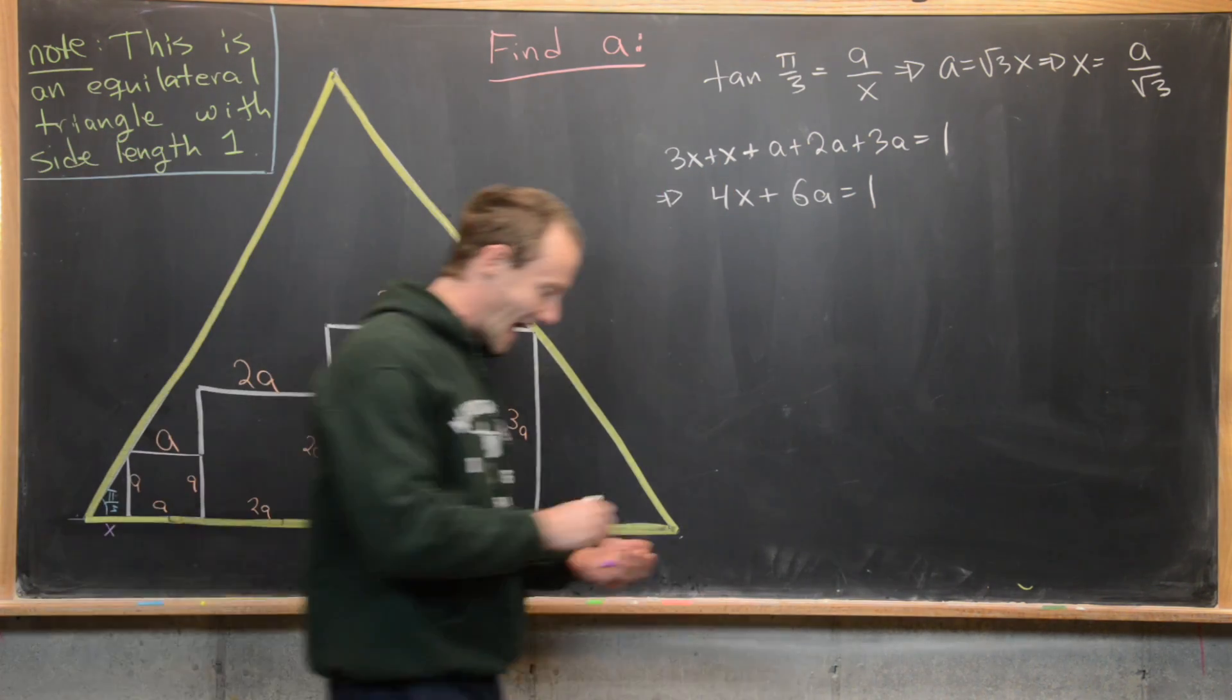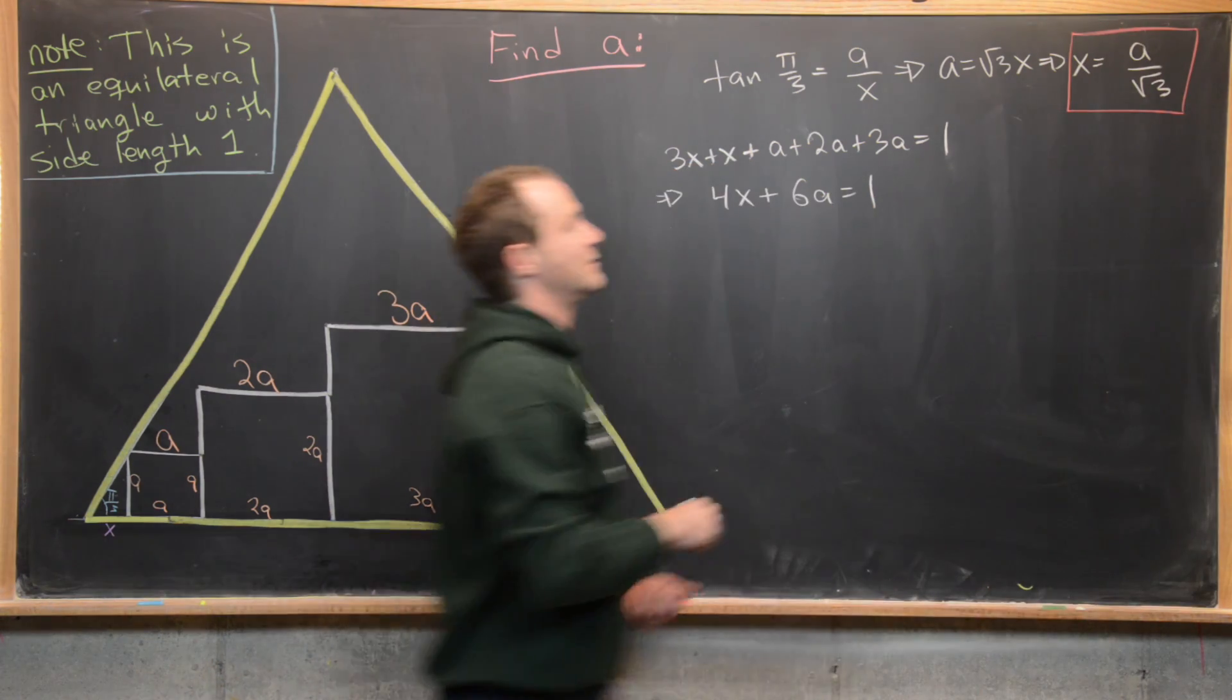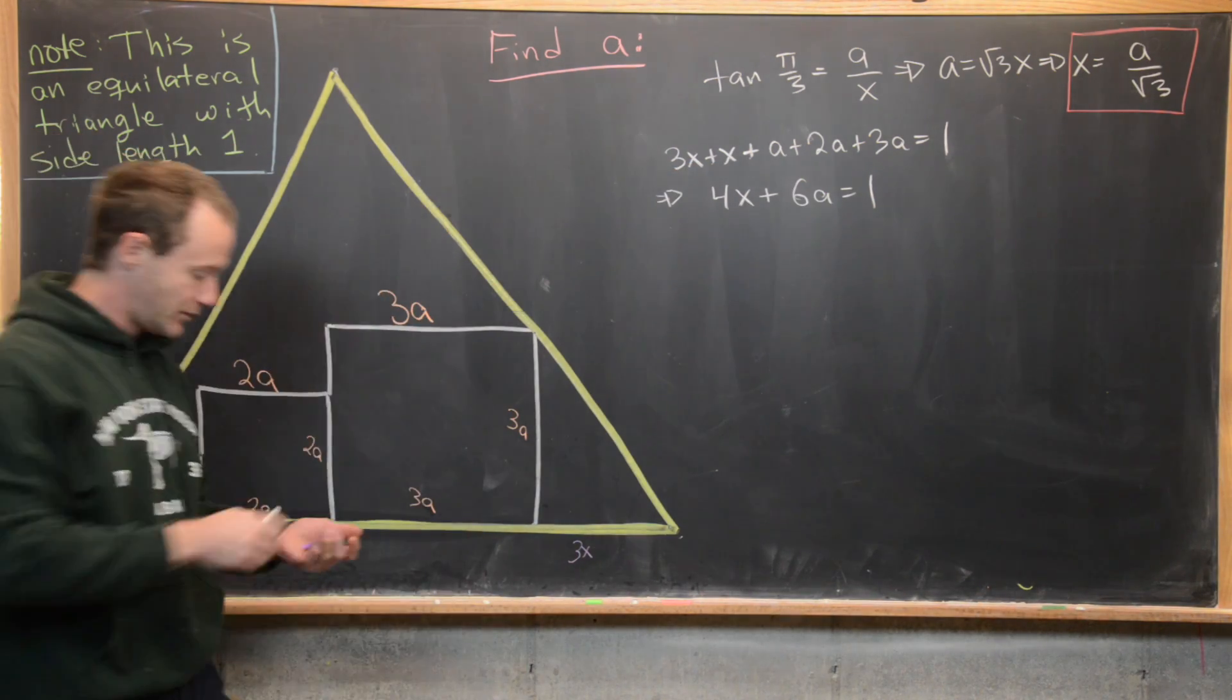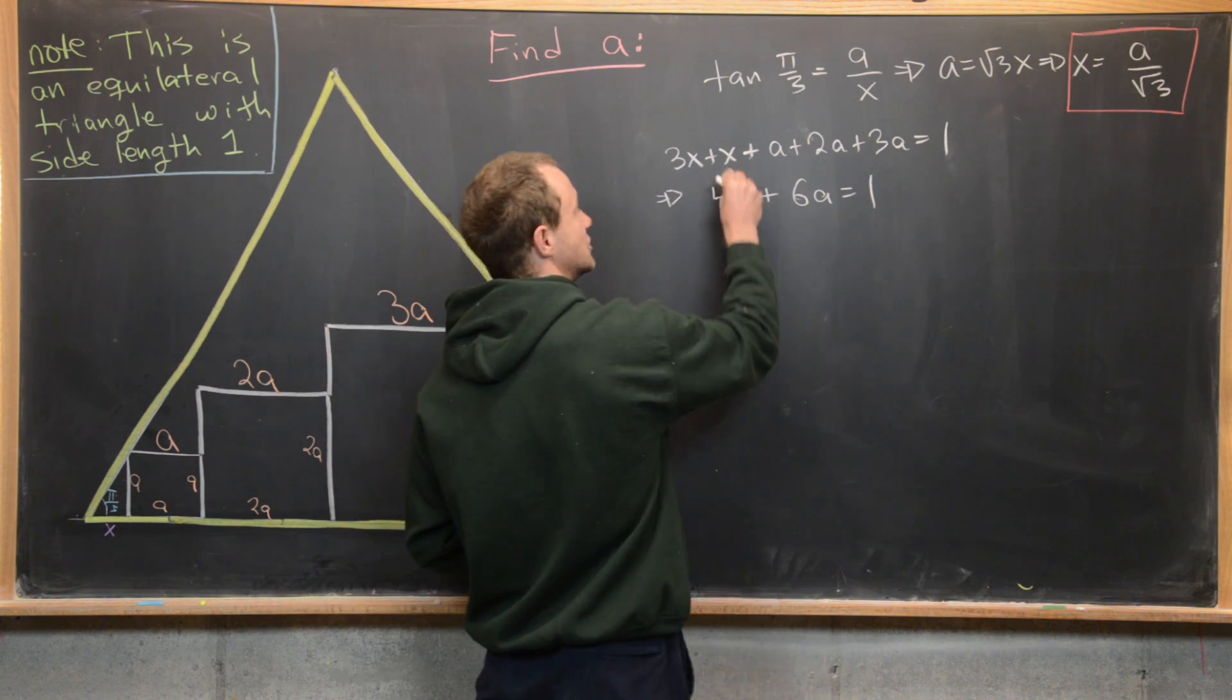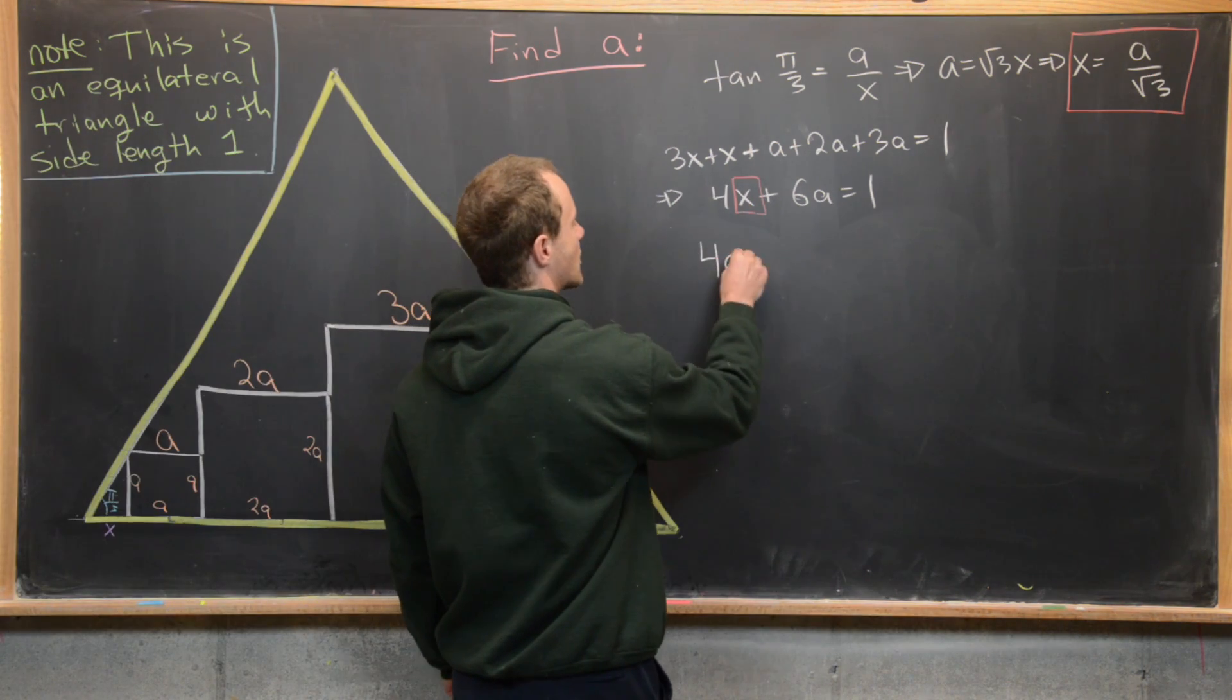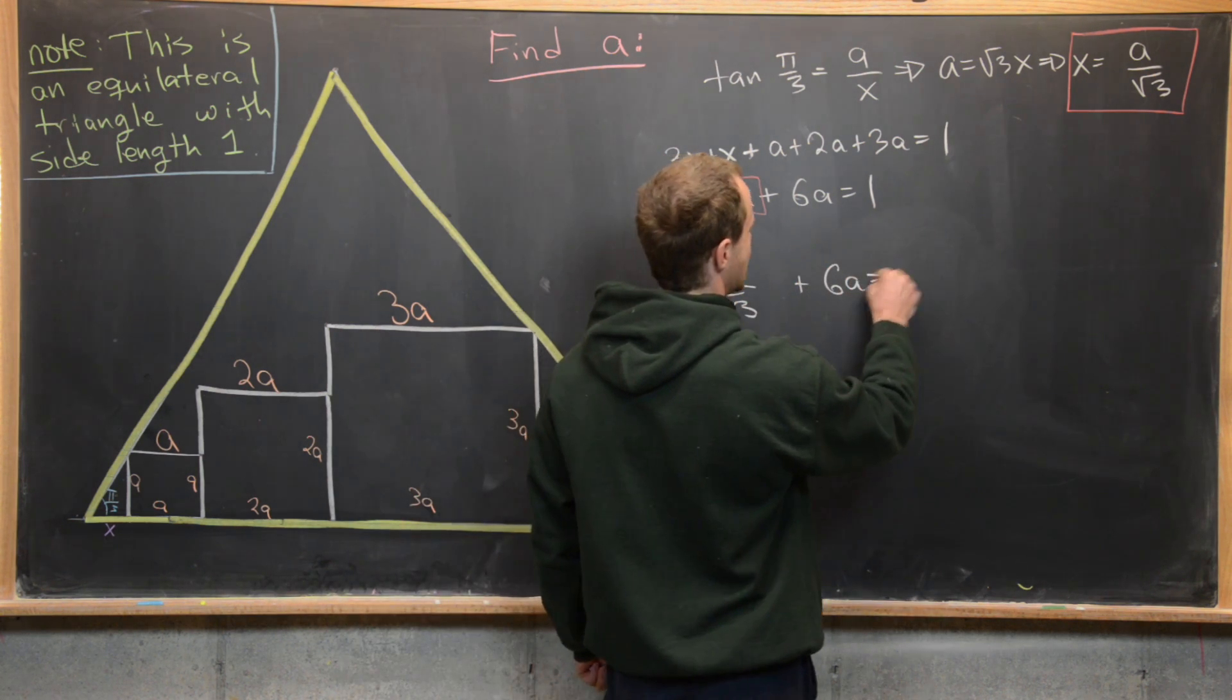Next we have a value of x in terms of a from this trigonometric relationship that we talked about so we can input that into our equation down here. We're going to have 4a over the square root of 3 plus 6a equals 1.